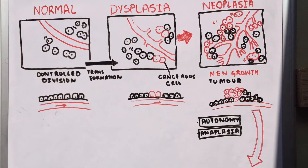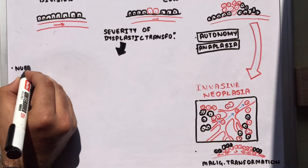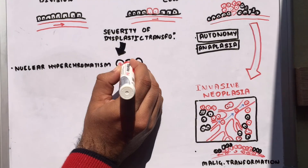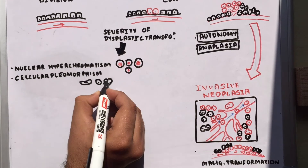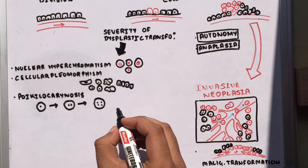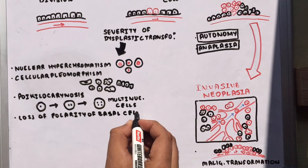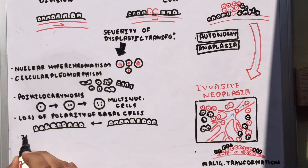Depending upon the degree and extent to which the dysplastic changes have developed in a lesion, the malignant potential of a precancerous lesion can be predicted. The key features of epithelial dysplasia are: nuclear hyperchromatism (large and deeply stained nuclei), cellular pleomorphism (altered size and shape of cells), poikilokaryo​sis (division of the nucleus without division of the cytoplasm, resulting in multinucleated cells), loss of polarity of the basal cells, and increased nucleo-cytoplasmic ratio.